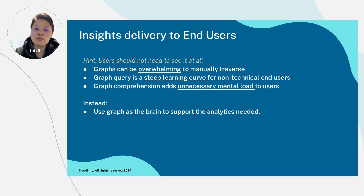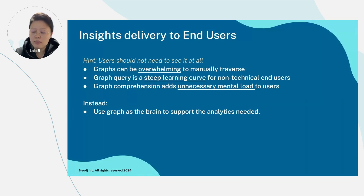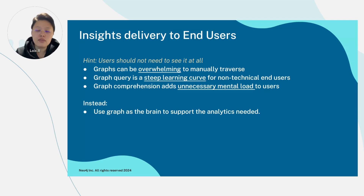I want to end the session by sharing a few takeaways. By using graph as the brain, we are effectively able to avoid some common pitfalls, such as graphs being overwhelming during manual traversal, graph queries being a steep learning curve for non-technical end users, and graph comprehension being mentally exhausting — adding unnecessary mental load if users were to look at the hairball. What we have done is treat graph more as a means to the end, whereby the end is to deliver useful and bite-sized insights to our front-end users. That's all to my sharing. I hope you have found it interesting and useful for your own insights generation use cases. Thank you.